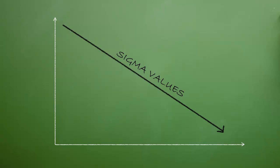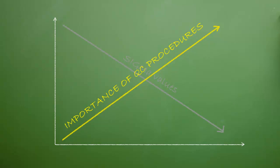Unfortunately, not all processes are Six Sigma, and as Sigma values decrease, the choice of QC procedures becomes increasingly important in detecting significant errors.